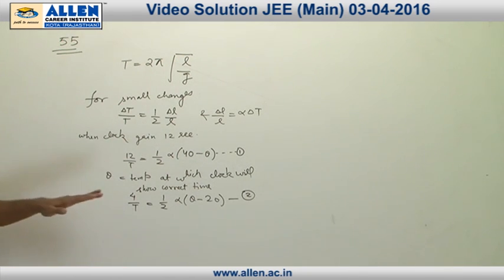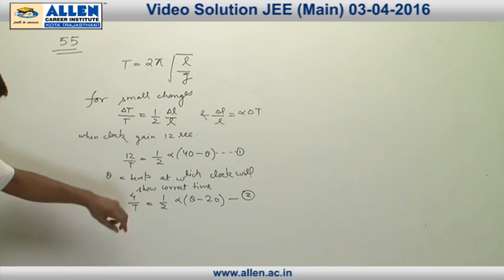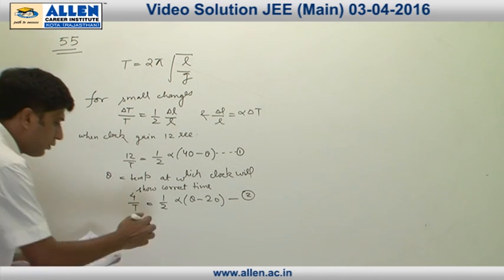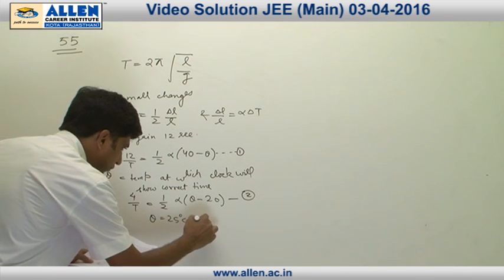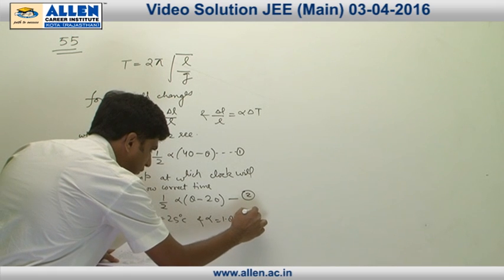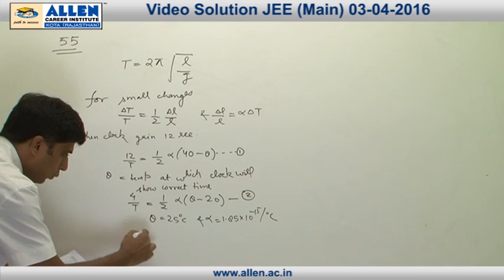Now on solving equations 1 and 2, we can get the value of α as well as the value of θ. From here, the value of θ is 25 degree centigrade and α is 1.85 × 10^(-5) per degree centigrade. Hence the correct answer is 2. Thank you.